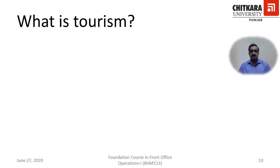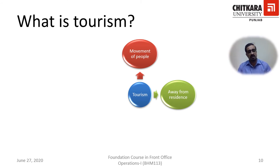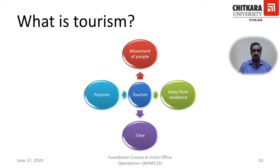What is tourism? As per the WTO, tourism comprises the movement of people — and this movement cannot be permanent, it has to be temporary. It should be away from their residence, and the duration should be more than 24 hours. The purpose must not involve earning. So we can define tourism as the temporary movement of people away from their usual place of residence for more than 24 hours for a purpose other than earning.